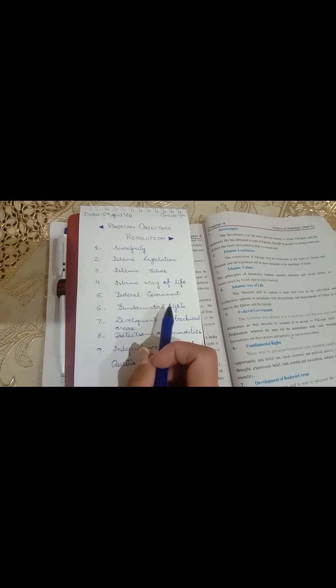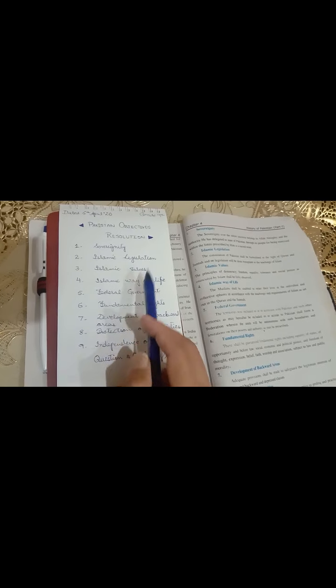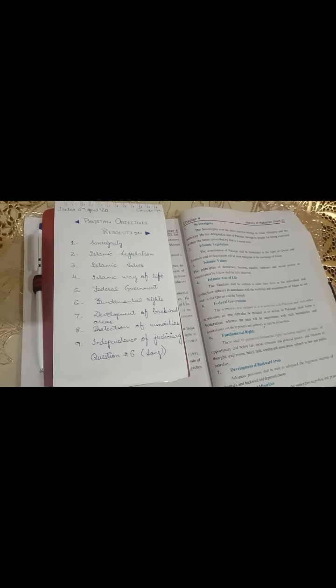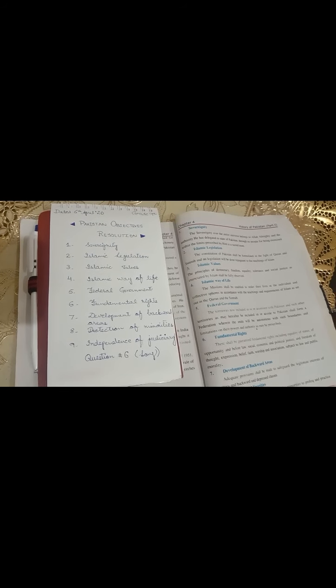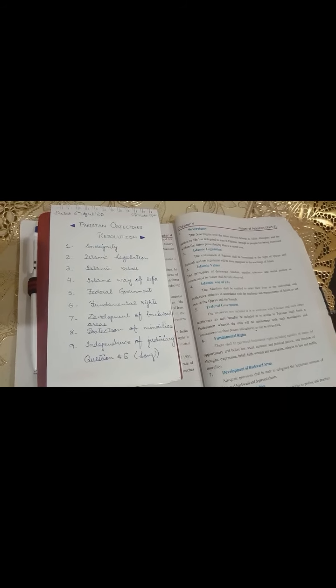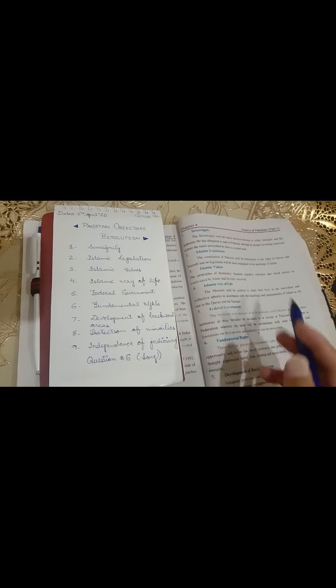Third is Islamic values. جو ہماری major Islamic values ہیں جو کہ Islam نے ہمیں دی ہے like democracy, freedom, آزادی, equality, ہر ایک کو equal ہونا چاہیے, tolerance, برداشت, social justice. یہ سب چیزیں اس constitution میں مدنظر رکھی جائیں گے.